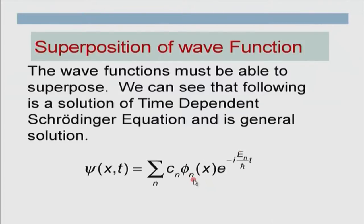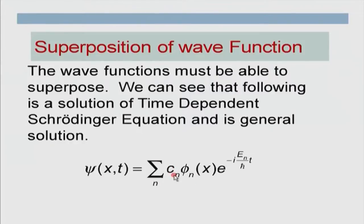This general superposition state is also a solution of the time-dependent Schrödinger equation. A particle in a box could have a wave function that is a linear combination of individual wave functions corresponding to specific states n. We can show that such a state is not a stationary state in general — the probabilities will be time-dependent. In the morning session we mentioned that in stationary states, probabilities are not functions of time. This superposition is an example of a non-stationary state.